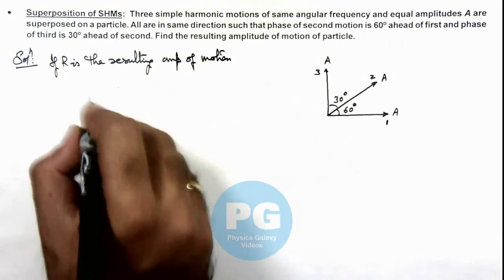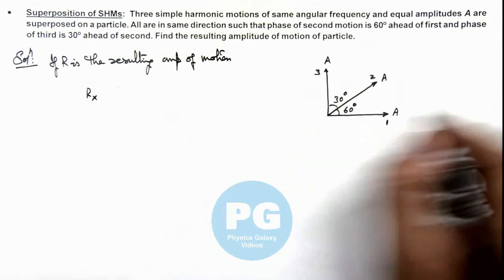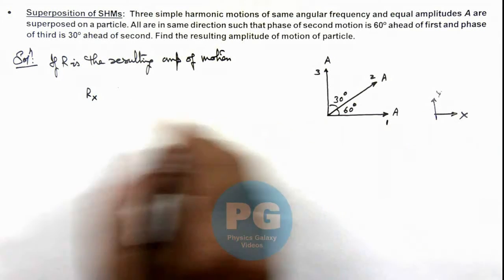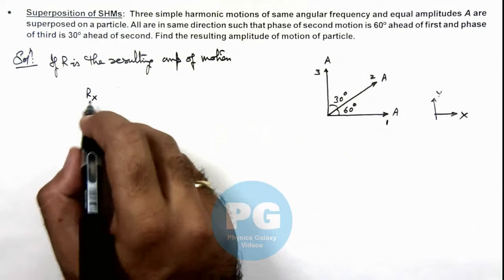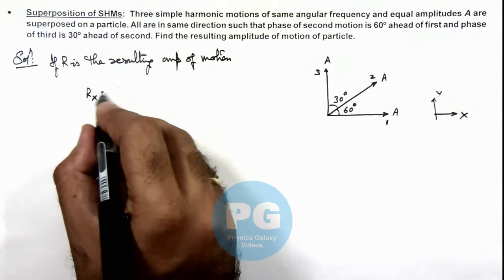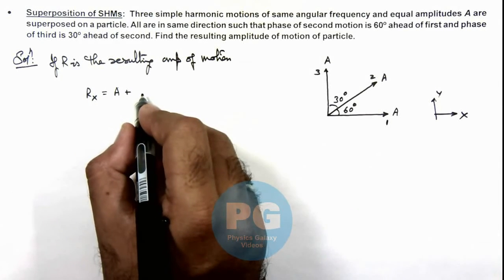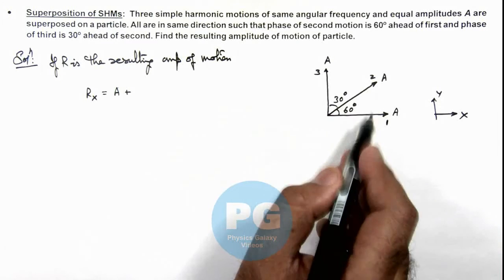Here we can write, if we consider this is x and this is y direction, the x component of the resulting amplitude can be given as A plus this will be A cos 60 degree.